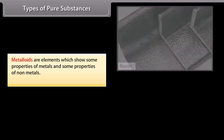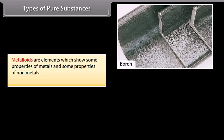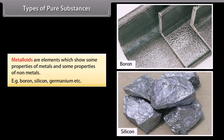Metalloids. Metalloids are elements which show some properties of metals and some properties of non-metals, like boron, silicon, germanium, etc.